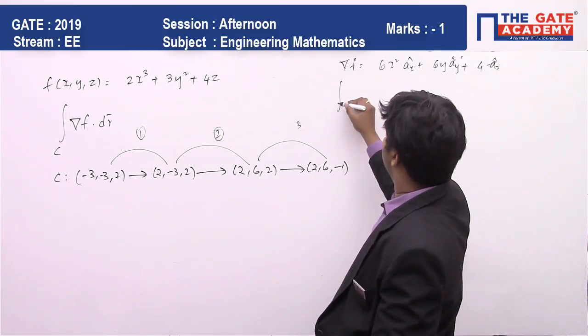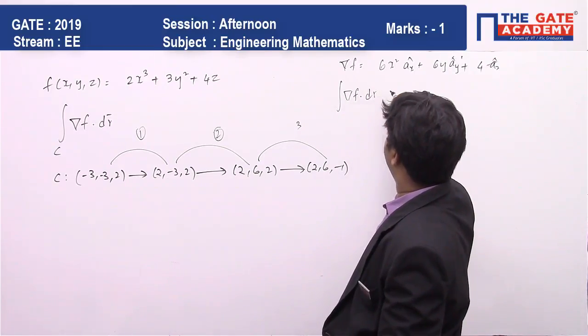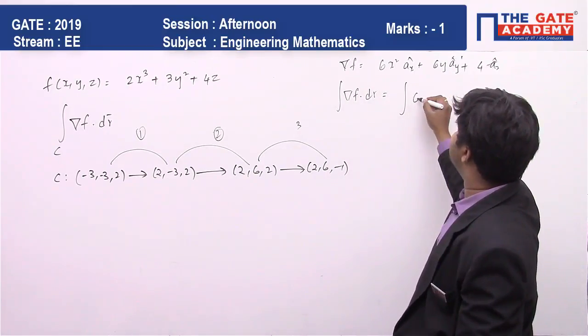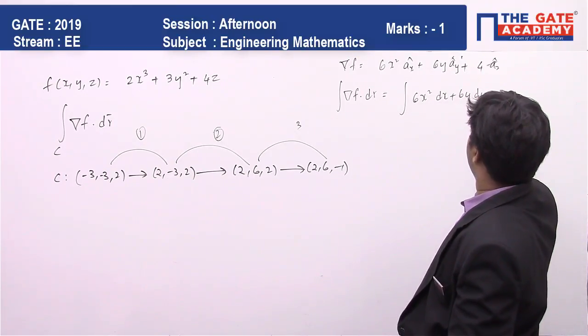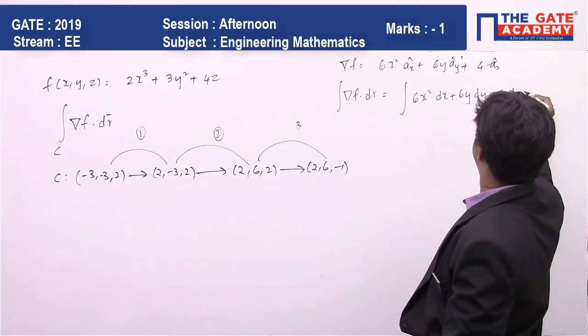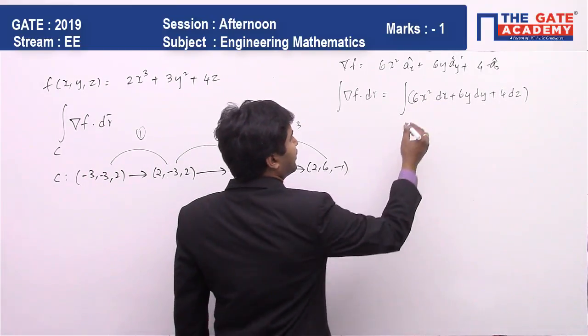Now when I do ∇f · dr, it will result in 6x²dx + 6ydy + 4dz.